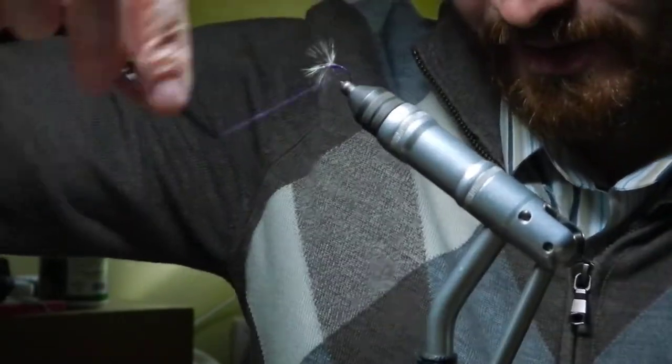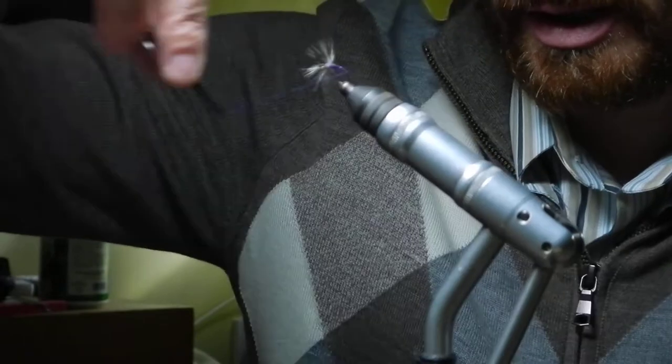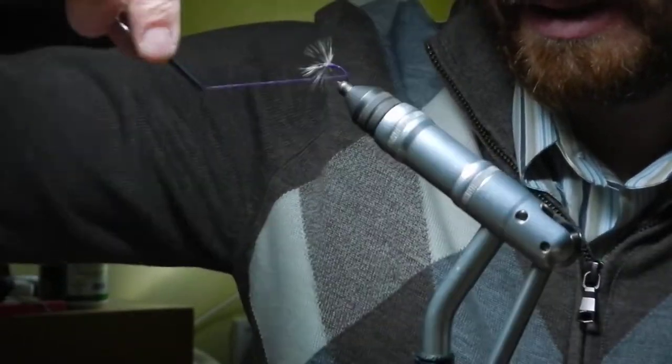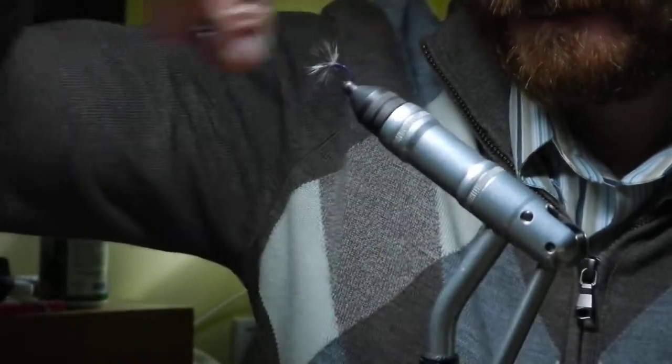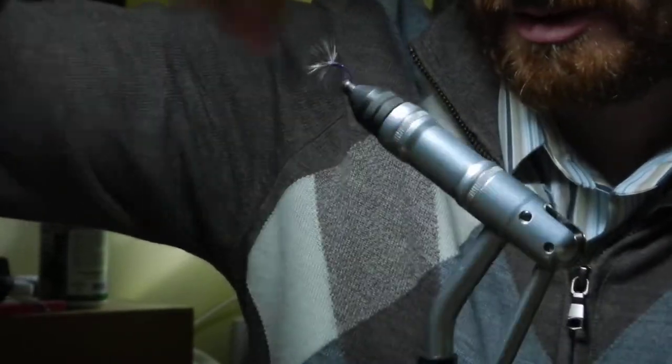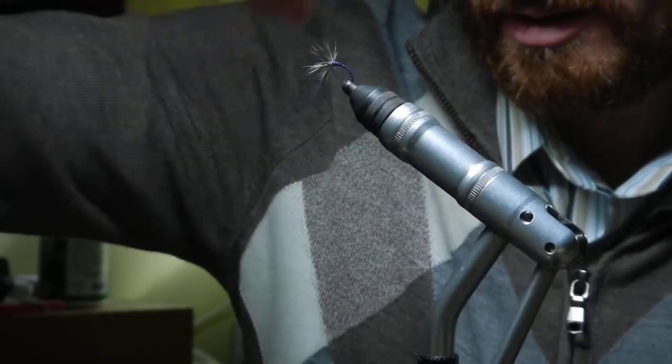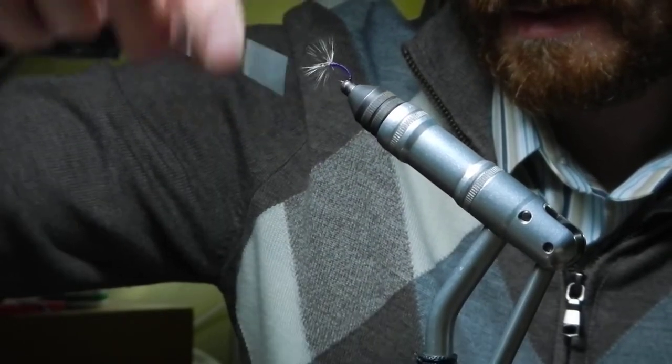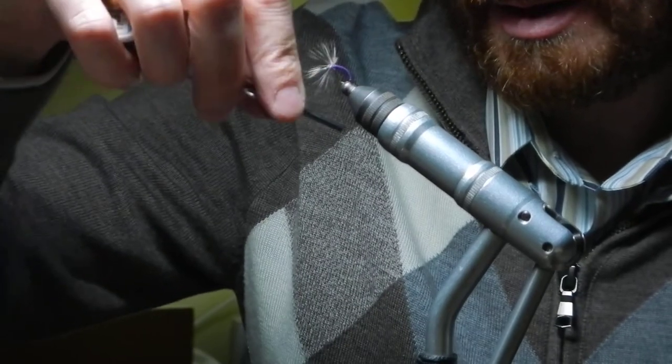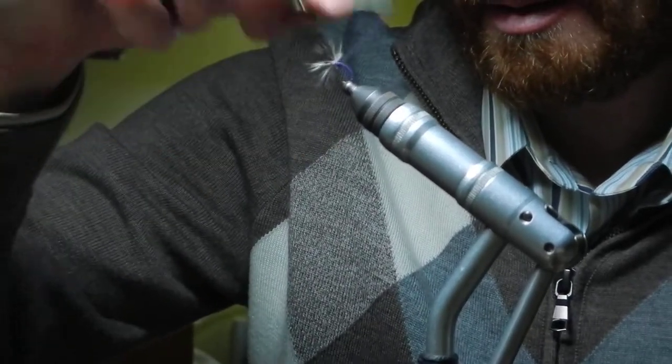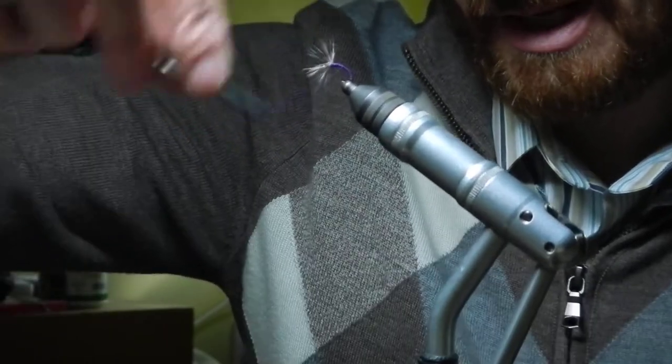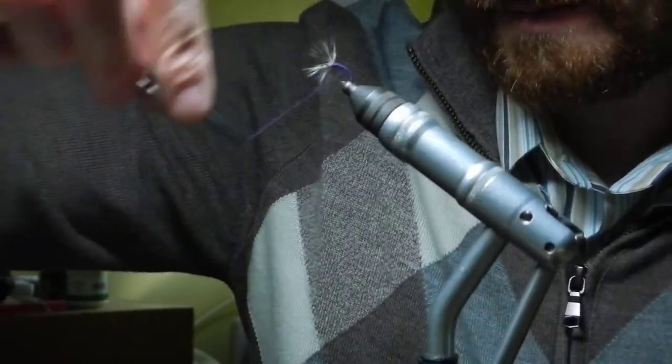Now I'm just going to wrap the thread down the shank of the hook. Pretty far down, I want to get some of that bend into it. And go back up. You don't really have to worry about getting a perfect body here, because the fish don't really care, just the fisherman.